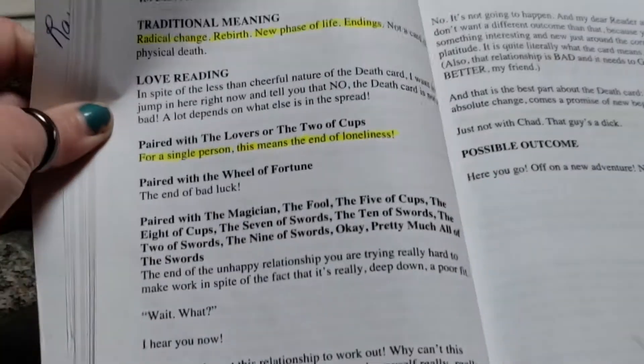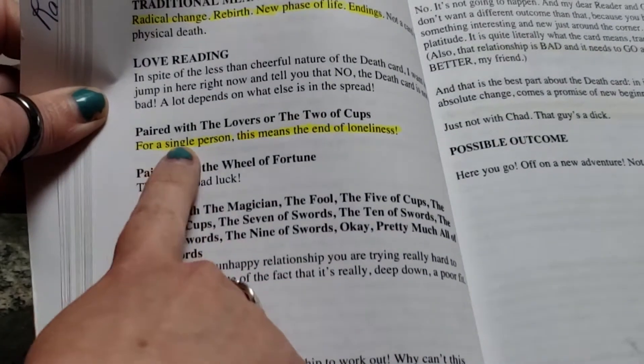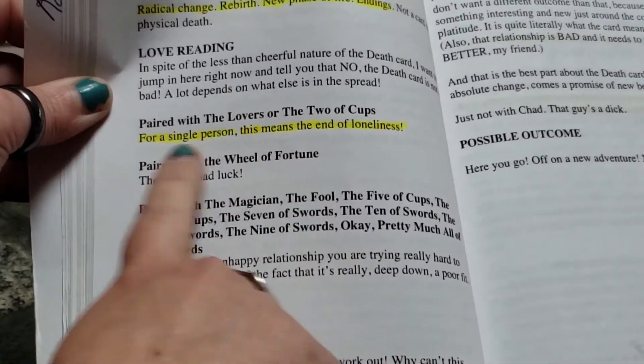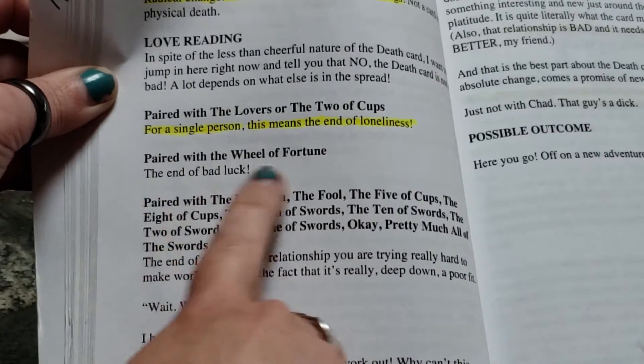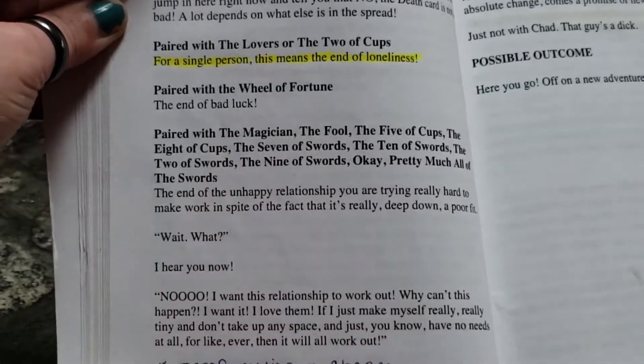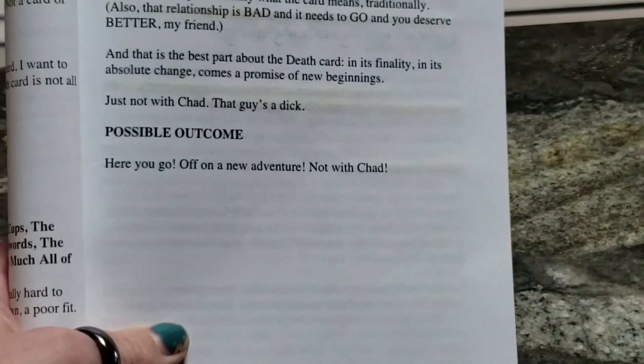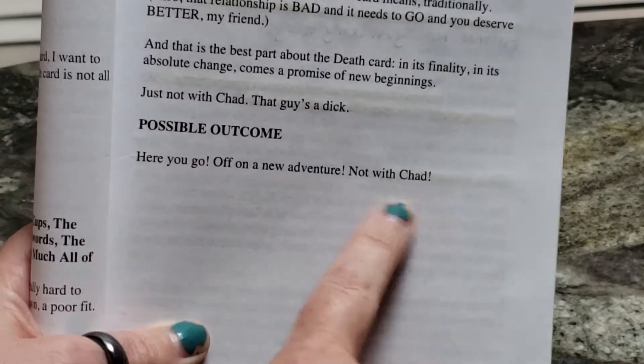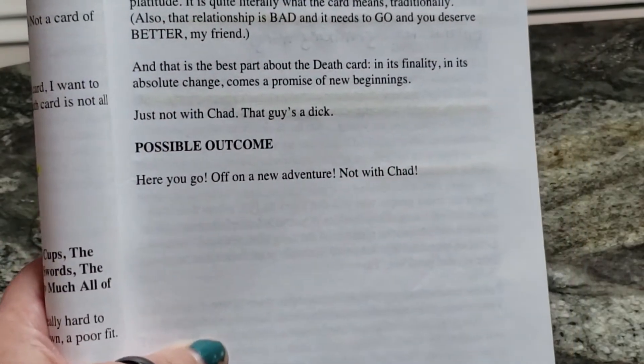So it really breaks it down and it gives you specifics. Okay, so here's the death card. And I went over this before and now I'm doing it again because obviously my first video didn't work. So as you can see, here's the death card. And it talks about traditional meanings, but then it talks about the love reading, right? And I hope it's focused. It talks about pairing the cards. So that's one thing I really like. It talks about when it's paired with what kinds of cards. And it goes over. So when it's paired with these cards, this is what it means.